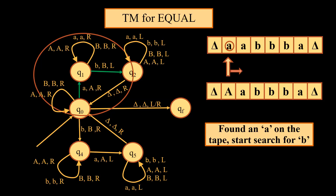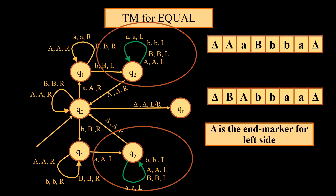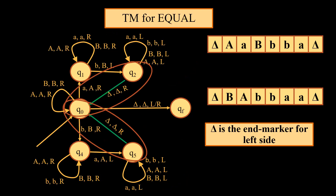Whatever symbols we come across — maybe capital A, maybe small a, or capital B — they will remain intact. That is why there is a self-loop on Q1. We just need to find B. Likewise, if we come across B, we just need to search for A and convert it into capital A. Once we have converted small a into capital A and correspondingly small b into capital B, we move back towards the left side. Whatever input we encounter while moving left will remain unchanged, and then we move towards delta, which serves as the end marker on the left side.